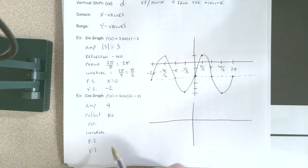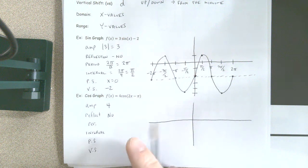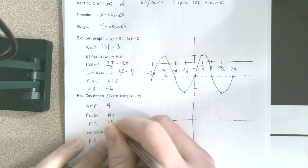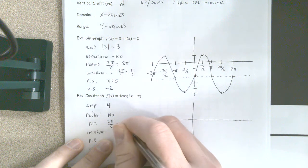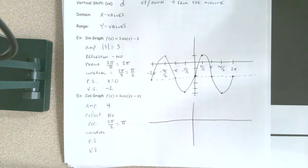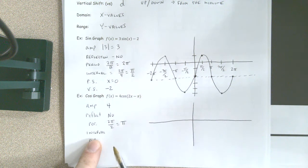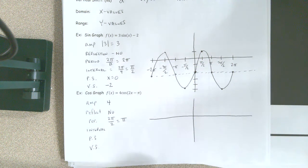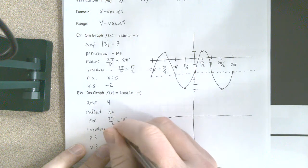Our period? Go ahead. Just going to be pi, so we're going to do 2 pi divided by 2. So our period is just simply pi. Our interval? Madeline? It's pi fourths. We're going to take pi and divide it by 4.